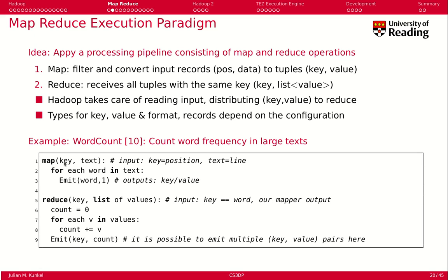In the Map function, we get a key which is the position in the text, and we get text which is, for example, a line of text if we're reading a CSV file or a text file. Then for each word in the text, we emit a tuple: word comma one. So the key is the word and the value is one, which is the number of occurrences we have seen.